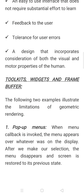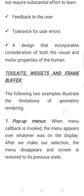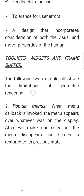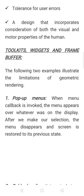The next topic is about toolkit widgets and the frame buffer. The following two examples illustrate the limitations of geometric rendering. The first limitation is about the pop-up menu. When a menu callback is invoked, the menu appears over whatever model you are displaying on the monitor. After we make our selection, the menu disappears and the screen is restored to the previous state. Whenever you click the right or left mouse button for which you have implemented the menu, the pop-up menu will be displayed on top of the model itself.